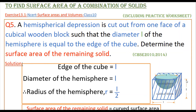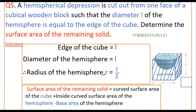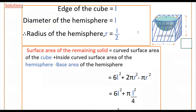Here, the diameter is L and the edge of the cube is also L. So edge of the cube = L, diameter of the hemisphere = L. Therefore, radius of the hemisphere R = L/2. The surface area of the remaining solid equals the curved surface area of the cube plus the inside curved surface area of the hemisphere minus the base area of the hemisphere, which we subtract since that circular base is removed.